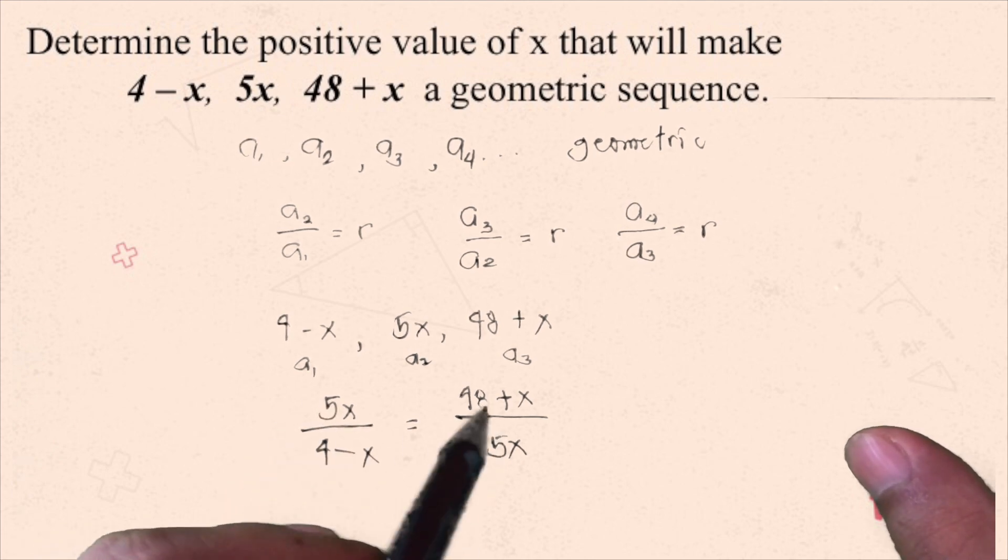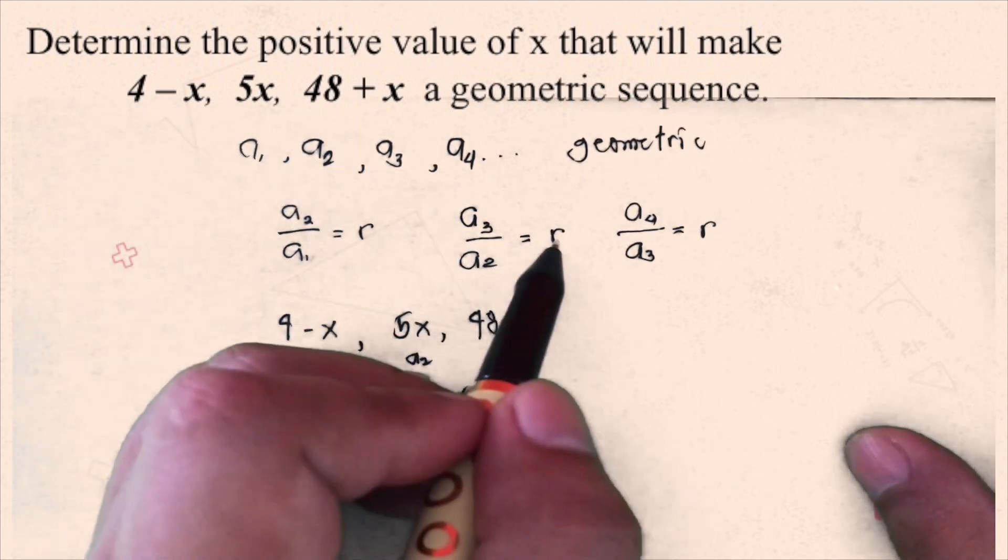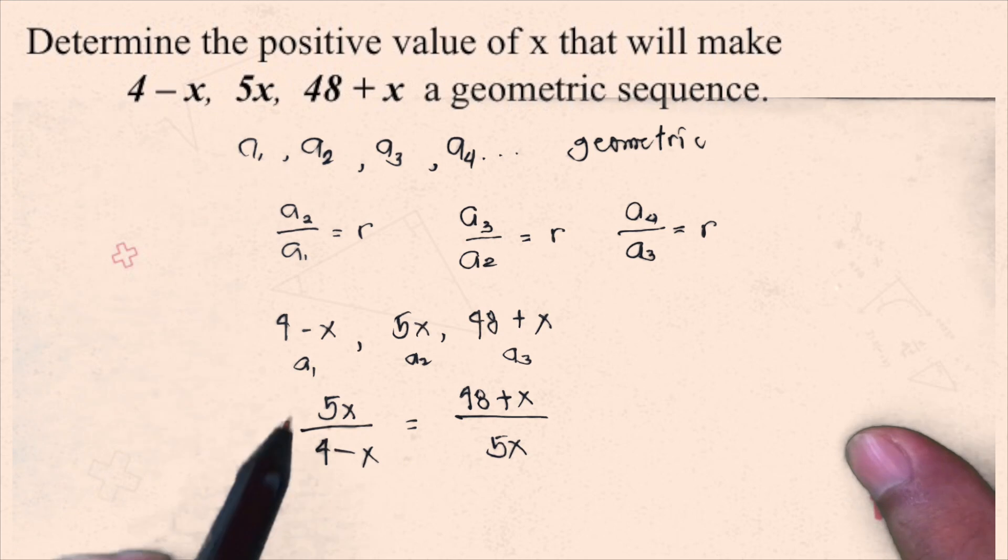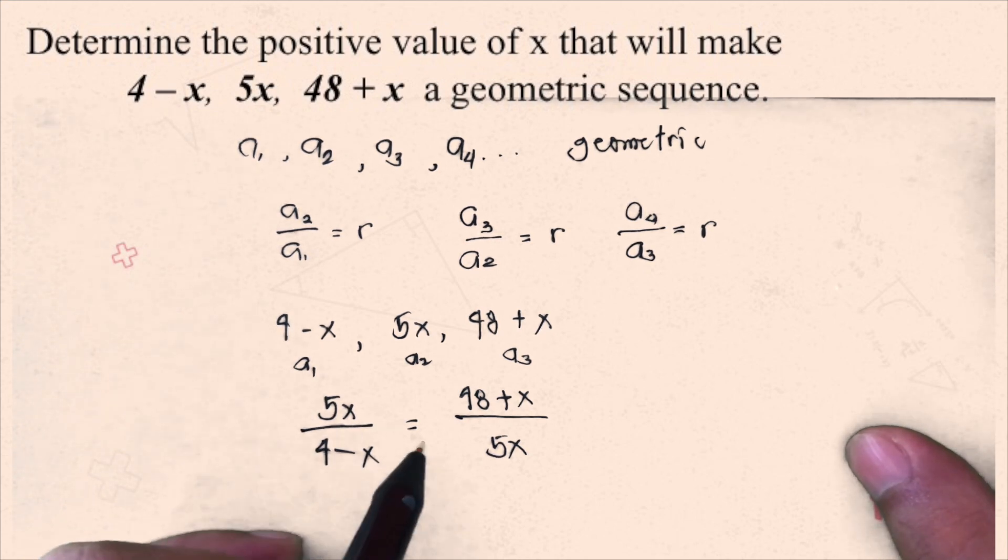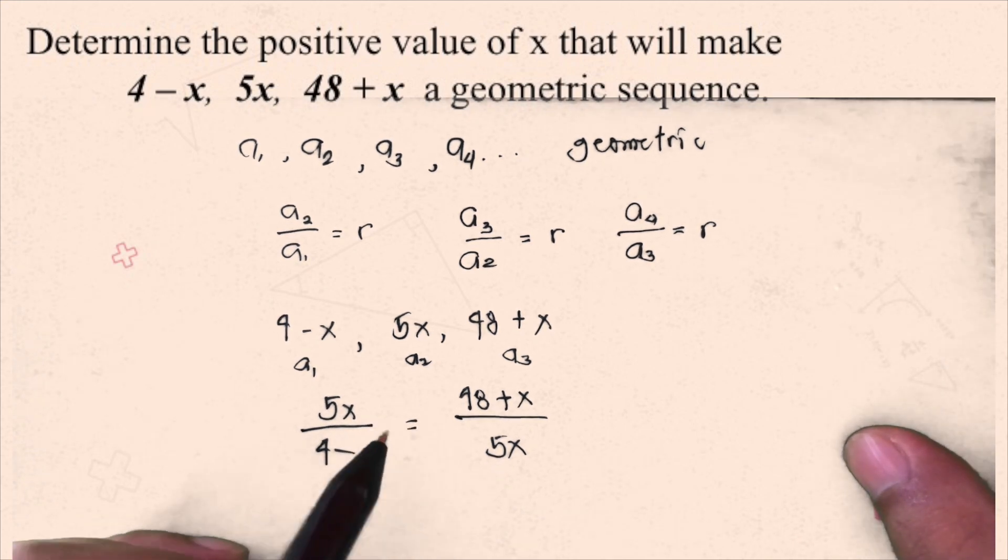48 plus x all over 5x. Because the result of this is just equal to the result of this, because we're getting the common ratio. Now, with this, we have 5x divided by 4 minus x equals 48 plus x divided by 5x. We'll now cross-multiply.